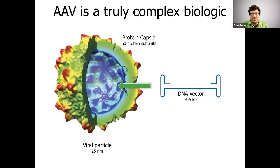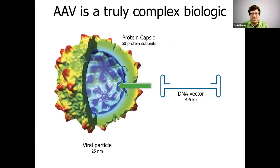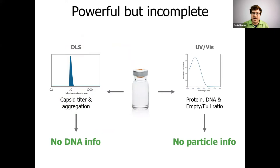AAV is a truly complex biologic. It consists of a protein capsid assembled by three different viral proteins in a certain ratio, and it contains a single-stranded DNA vector inside. When characterizing your AAV, you want to know a lot of things: How much protein do I actually have? How much DNA do I actually have? Are my capsids intact? Is it at the right size? Is there any aggregation? We can focus in on two technologies — DLS and UV-Vis. Each of them are powerful, but they are incomplete; they tell only part of the story.